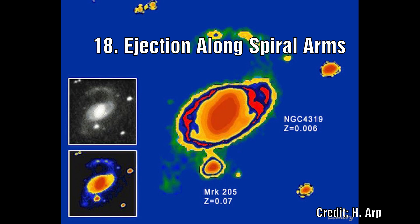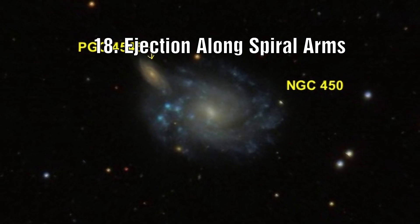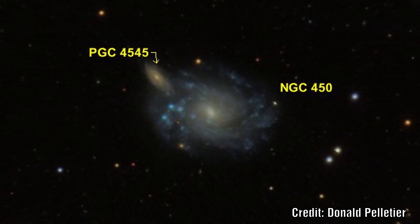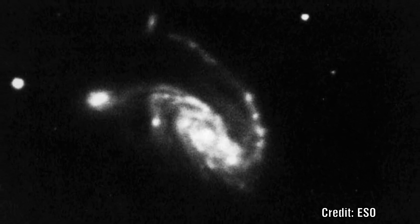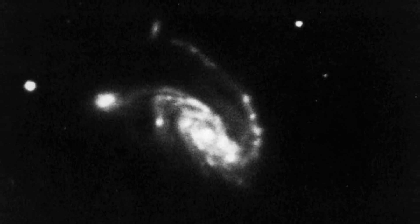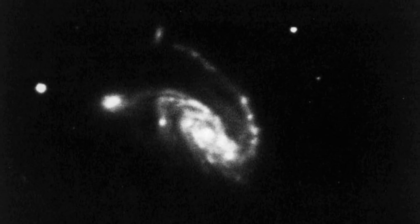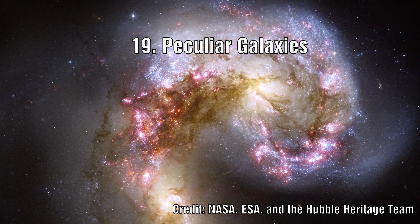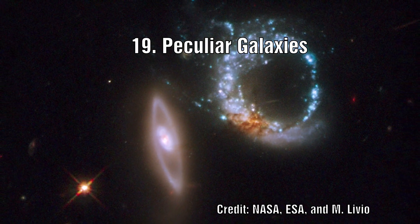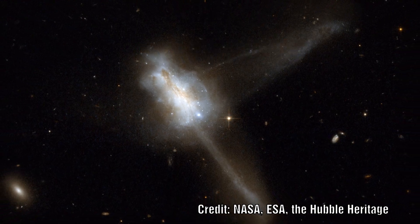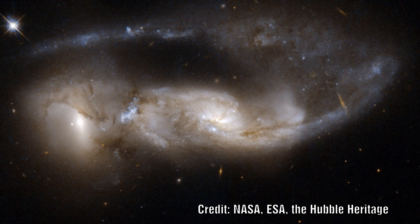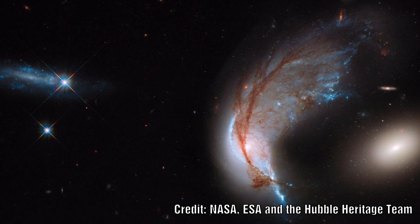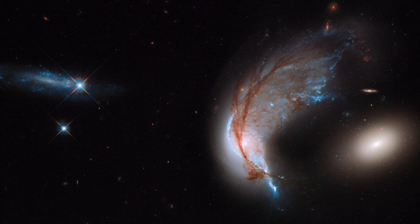Number 18: These images also show that we need to consider this ejection process as acting along the spiral arms. In some examples of galaxies, these arms extend over vast distances and show clear clumping of material. Number 19: Peculiar galaxies — there is much more we can learn from the examples of Arp's vast catalogue of peculiar galaxies for clues as to the mechanisms that govern galaxy birth and evolution.